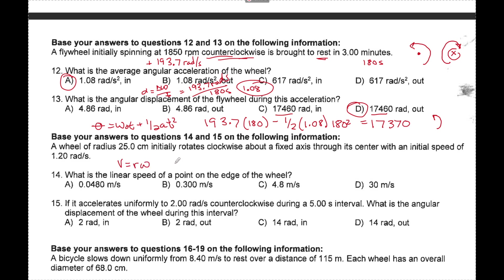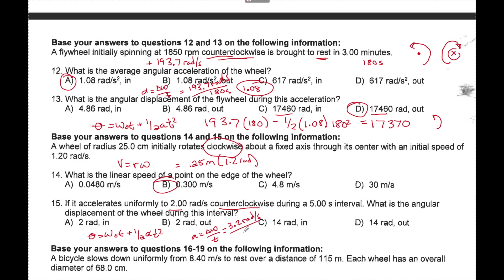Linear speed V equals r times omega: 0.25 meters times 1.2 rads per second gives 0.3 meters per second. If it accelerates to 2 rads per second counterclockwise — opposite the initial — during a five-second interval, what is the angular displacement? Alpha equals change in omega over t. The change is actually 3.2 rads per second divided by 5, giving alpha of 0.64 rads per second squared. Plugging in gives theta of 2 radians.